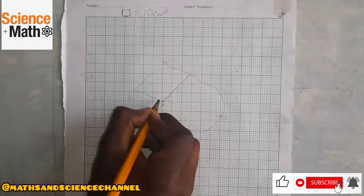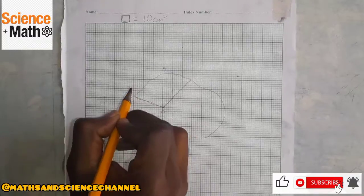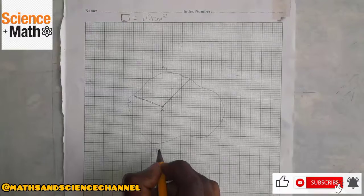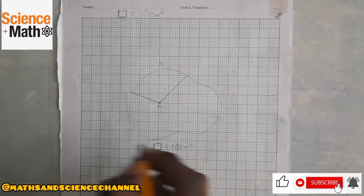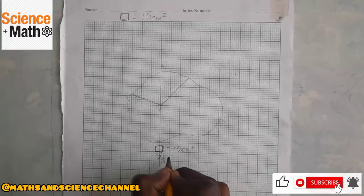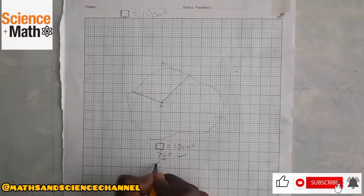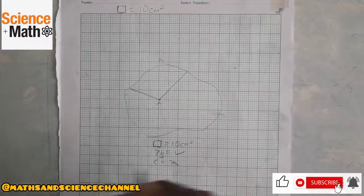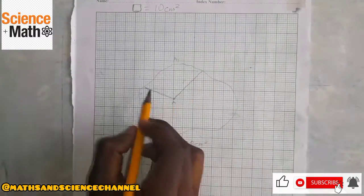what you are going to do is count the number of perfect square boxes. A perfect square box is equal to 10 centimeters squared. But if the line is crossing more than half of the box, we count it. If it is less than half of the box, we ignore it.